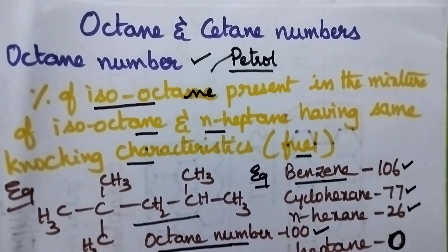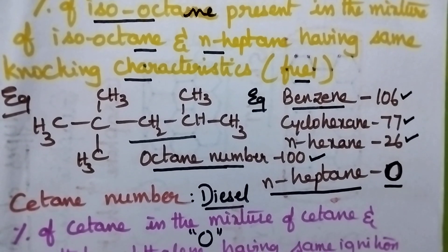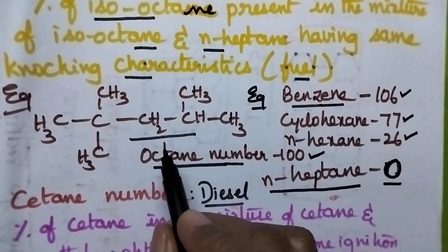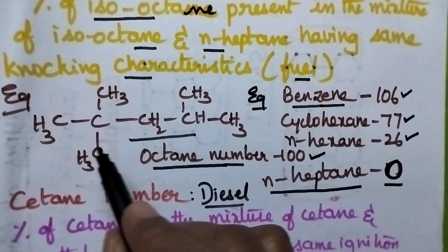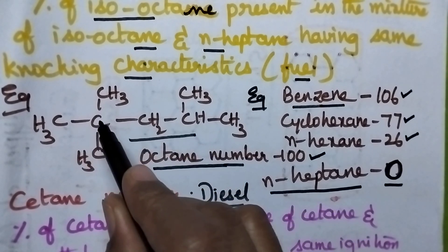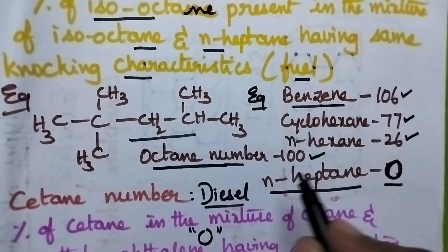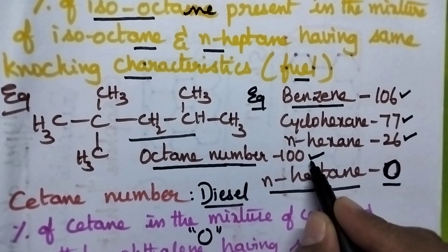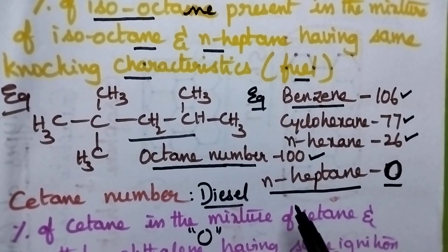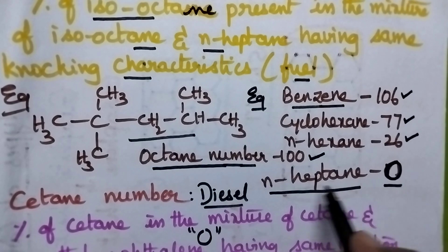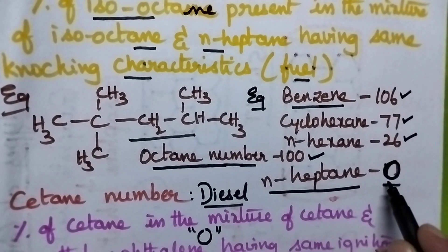Let us see the structure of octane. This isooctane is having branched structure that is 2,2-dimethyl-4-methyl-pentane and its octane number is 100 whereas the octane number of n-heptane that is straight chain heptane is 0.